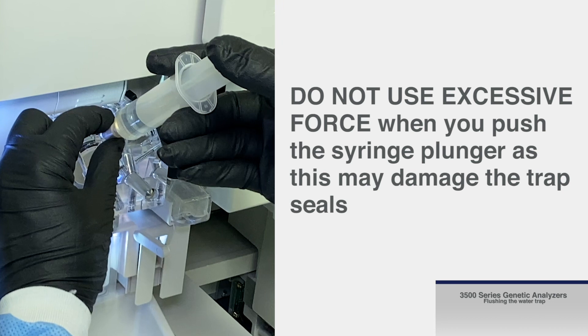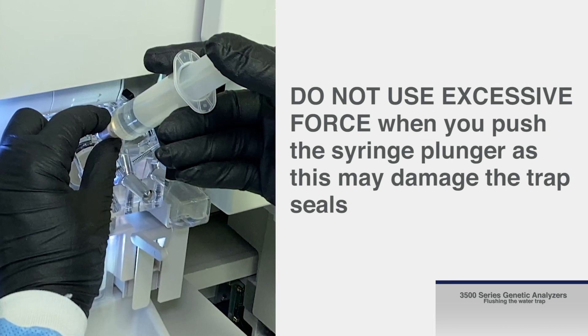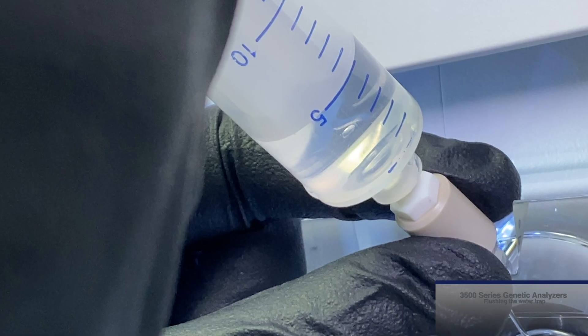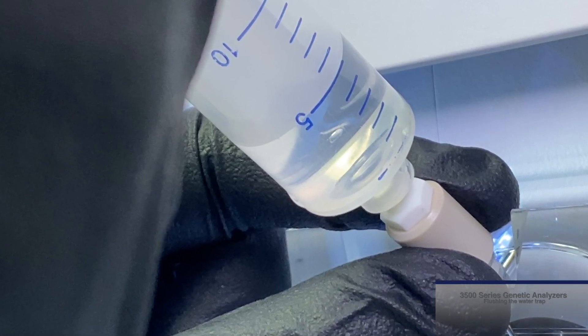Do not use excessive force when you push the syringe plunger as this may damage the trap seals. Take approximately 30 seconds to flush 5 milliliters of either distilled or deionized water through the trap.